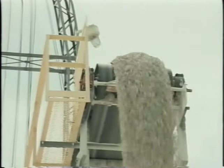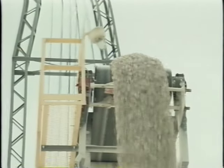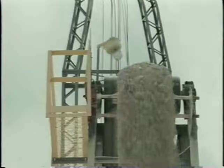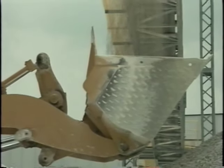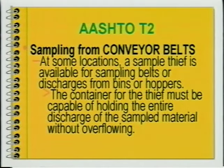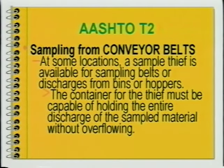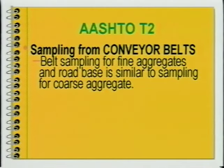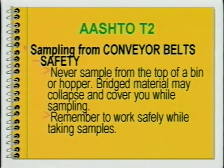You can also collect a discharge stream sample from the end of the belt. Pass a suitable container through the entire width of the discharge stream. A clean bucket on a front end loader often works well as a sampling container for belt discharge samples. At some locations, a sample thief is available for sampling belts or discharges from bins or hoppers. The container for the thief must be capable of holding the entire discharge of the sampled material without overflowing. Belt sampling for fine aggregates and road base is similar to sampling for coarse aggregate. Here's a safety note: never sample from the top of a bin or hopper. Bridged material may collapse and cover you while sampling.